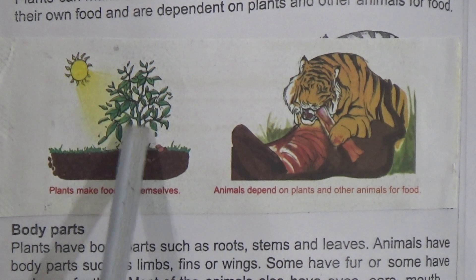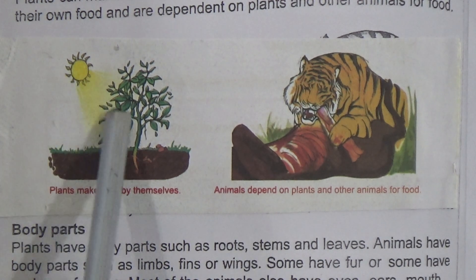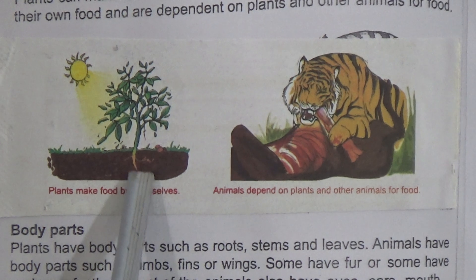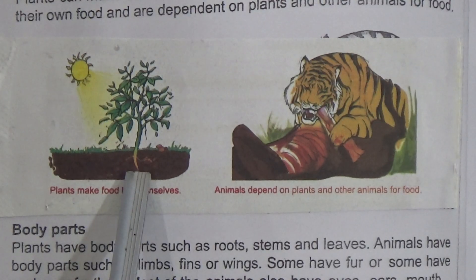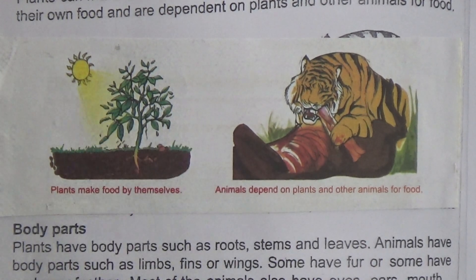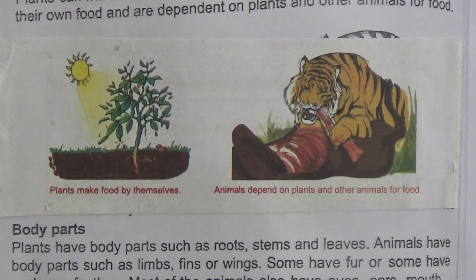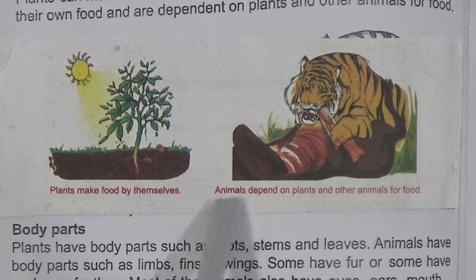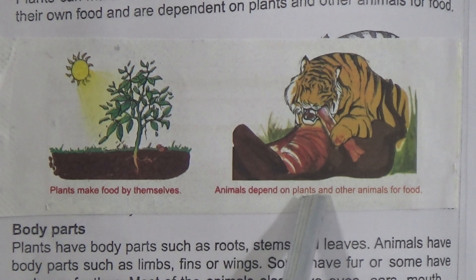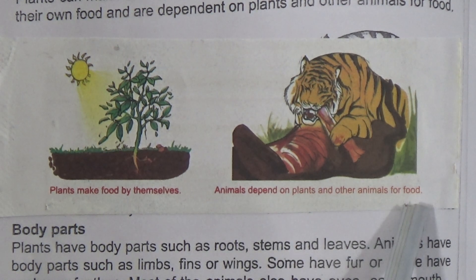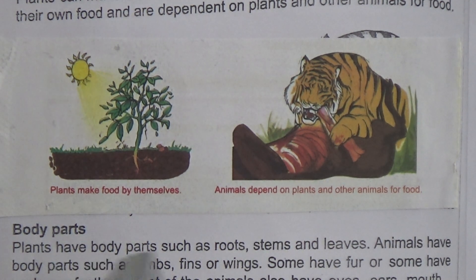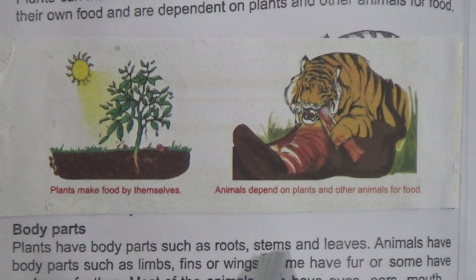Plants make their food by themselves by the presence of sunlight. They take nutrition or water from soil, and they take carbon dioxide to make their own food. Animals, on the other hand, depend on plants and other animals for food.